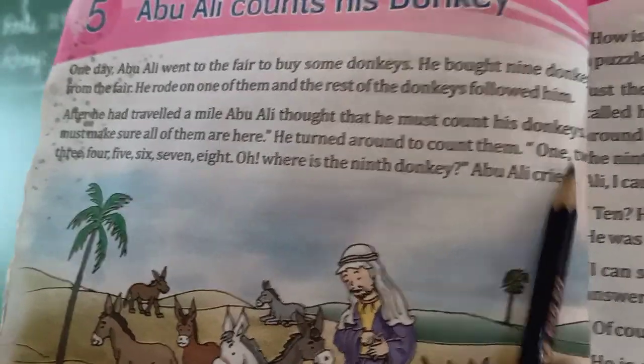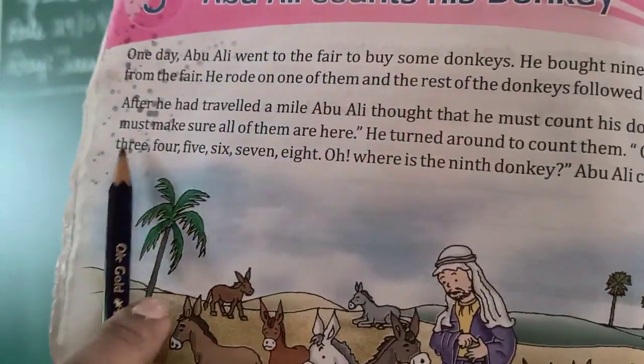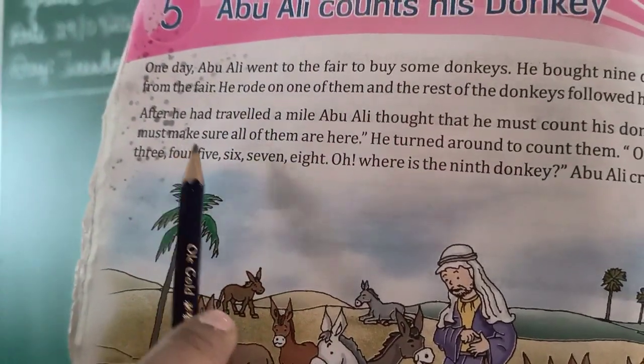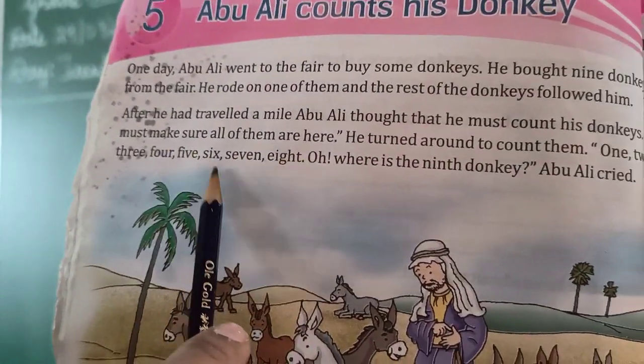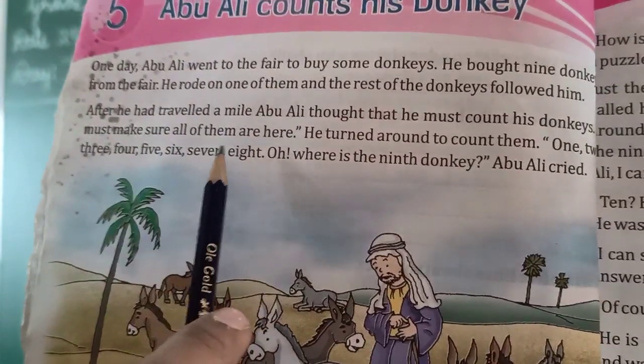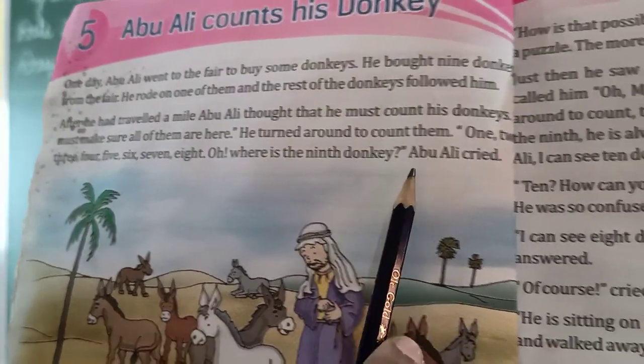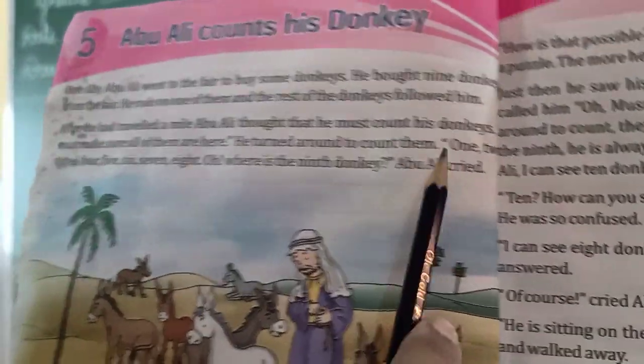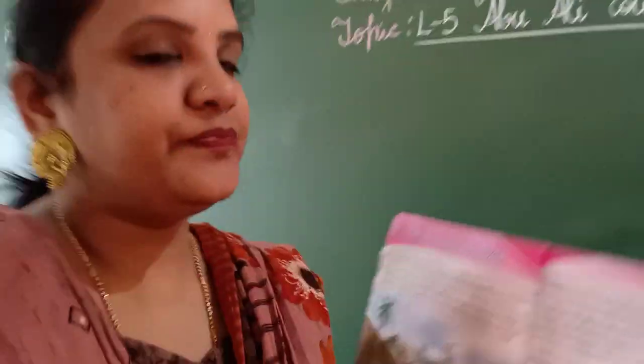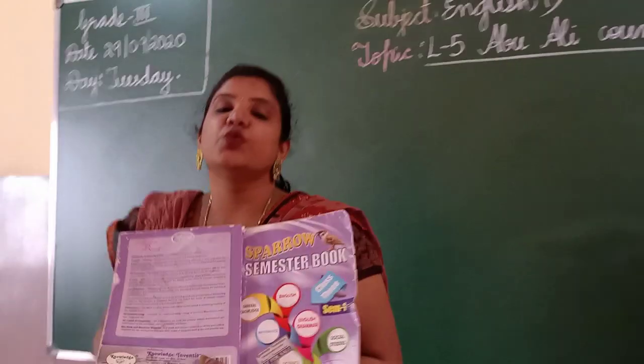I must make sure all of them are here. He turned around to count them. One, two, three, four, five, six, seven, eight. Oh, where is the 9th donkey? Abu Ali cried.